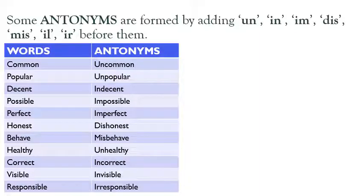Common, uncommon. So what we have done? We have put 'un' in front of common — prefix 'un' use kiya hai. Popular, unpopular. Decent, indecent — here we have used prefix 'in' to make an antonym. Possible, impossible. Perfect, imperfect. In impossible and imperfect we have used 'im'. Honest, dishonest — in this word we have used 'dis' to make an antonym.